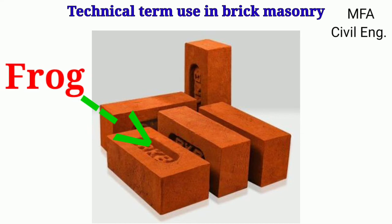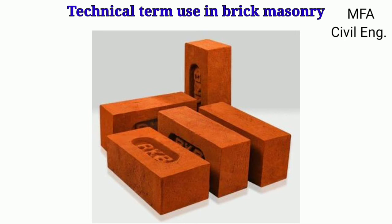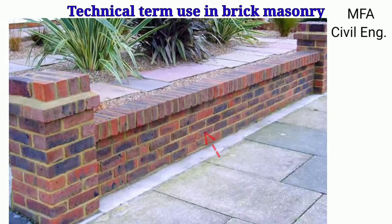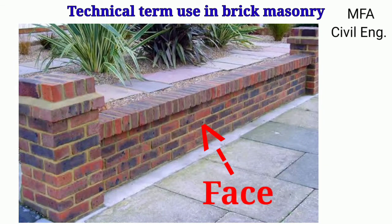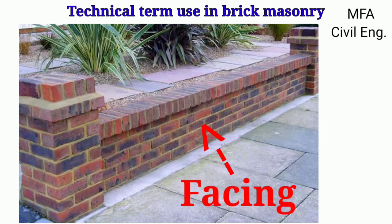The frog holds the mortar, therefore the bond becomes more strong. The name of the brick manufacturer can be engraved in the frog. The surface of a wall exposed to the weather is called the face, and the material used in the face of the wall is called the facing.